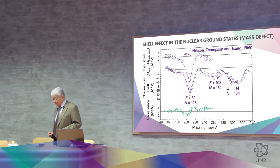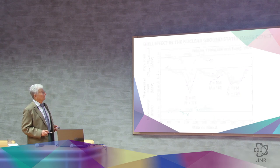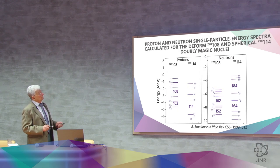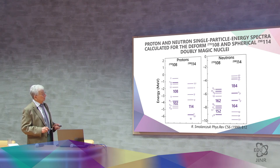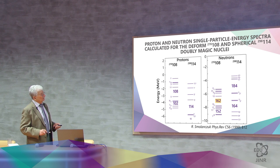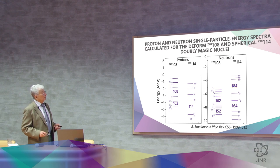These will also be doubly magic nuclei. And if we look at the system of levels again, then we see a gap. 108 protons and 162 neutrons, 114 protons and 184 neutrons, and so on.